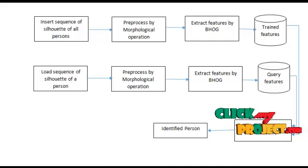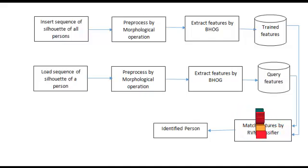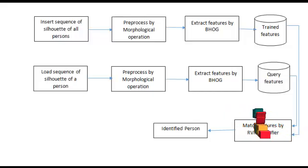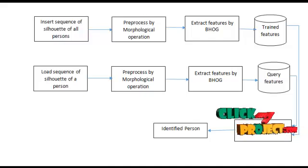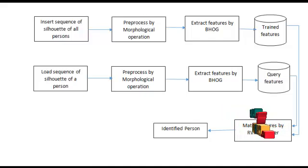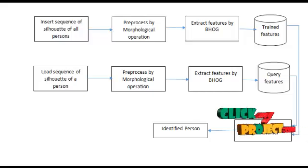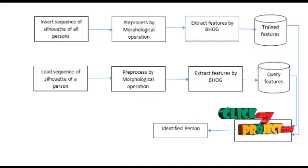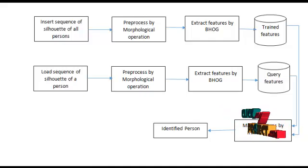After training, we use a query process. In the query process, we use only one person's silhouette — randomly selecting one person's silhouette. This silhouette may show the person from the back or from another angle. We load one person's 11 views of silhouette. The input sequence undergoes morphological operation, which removes unwanted pixels and preserves the edges of the person. Then BHOG feature extraction is performed, extracting around 81 features. The extracted feature is considered the query feature, and the feature values are stored in a .mat file format.